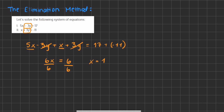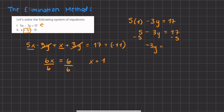Now that we know x equals 1, we can choose either of the original equations to find y by plugging in the x value. Using our first equation, we have 5 times 1, minus 3y, equals 17, which simplifies to 5 minus 3y equals 17. We subtract 5 from both sides: negative 3y equals 12. Then we divide both sides by negative 3 to isolate y, giving us y equals 12 divided by negative 3, which is negative 4, since a positive divided by a negative gives a negative.